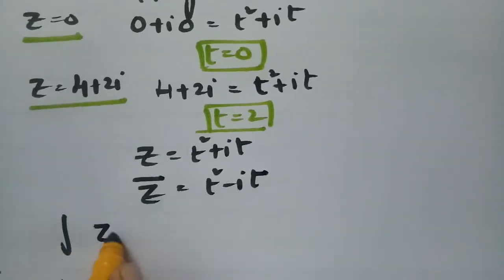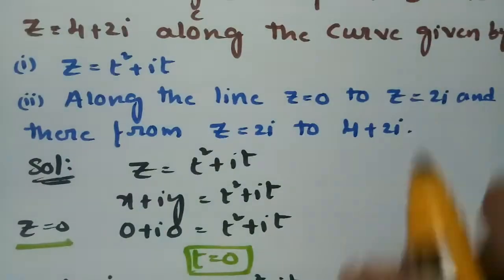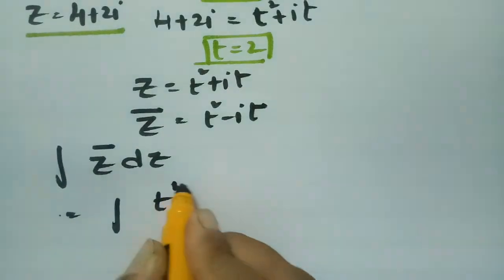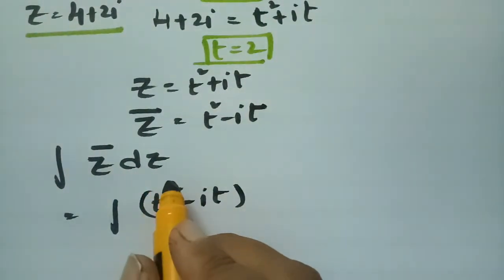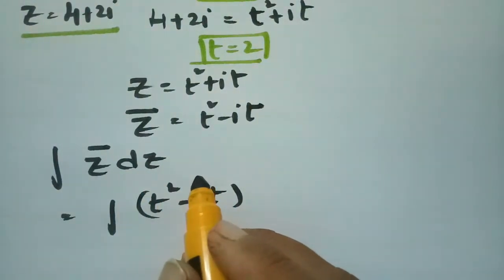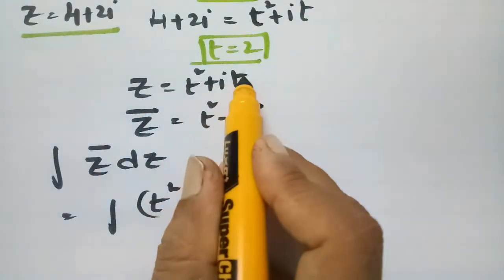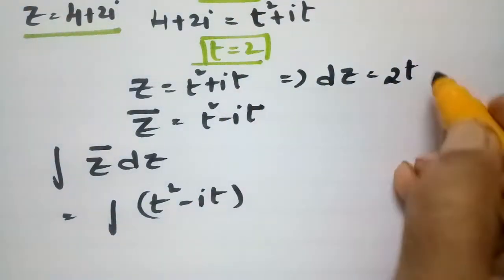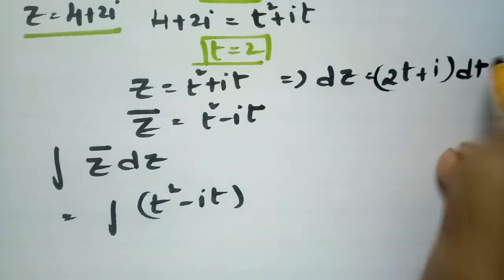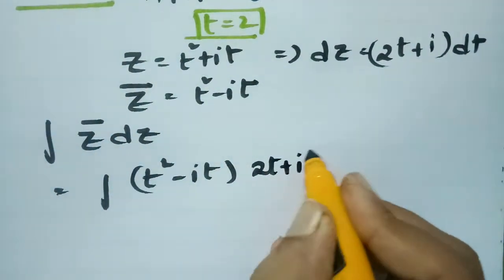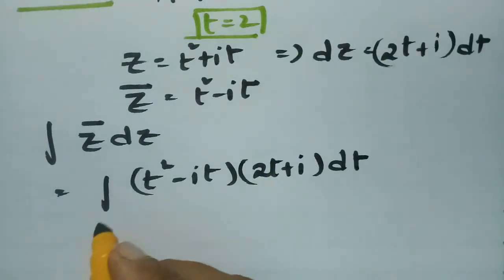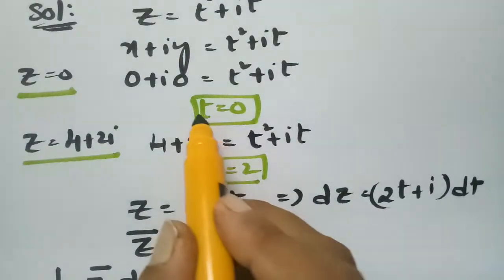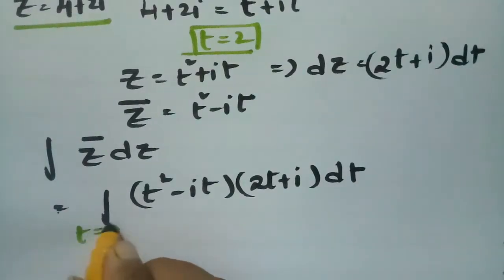Evaluating the integral of z̄ dz from z=0 to z=4+2i: z̄ = t² - it, and dz — since z = t² + it — differentiating gives dz = (2t + i) dt.